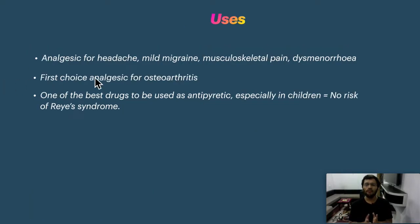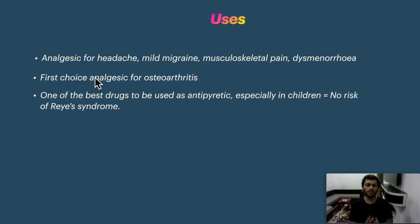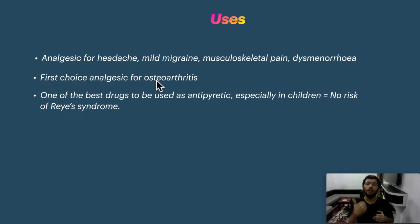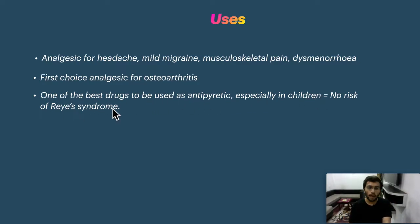Uses of paracetamol include: headache, mild migraine, musculoskeletal pain, and dysmenorrhea. It is also the first choice for osteoarthritis — not rheumatoid arthritis, which is an inflammatory condition. It can be used as an antipyretic even in children because there is no risk of Reye's syndrome. You should recall which drug is associated with Reye's syndrome and comment below.